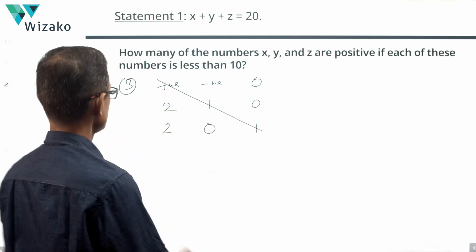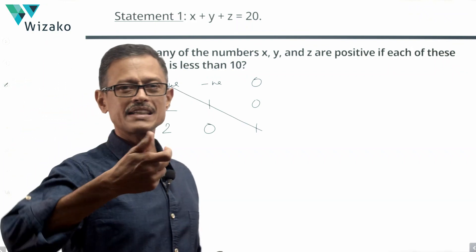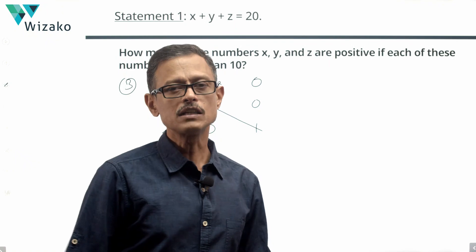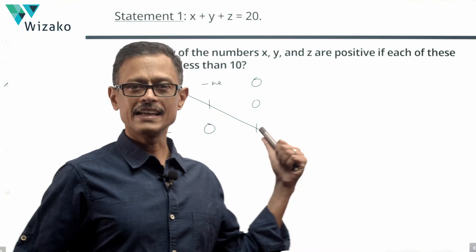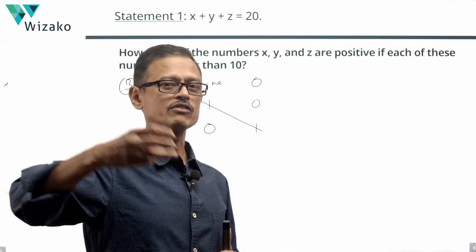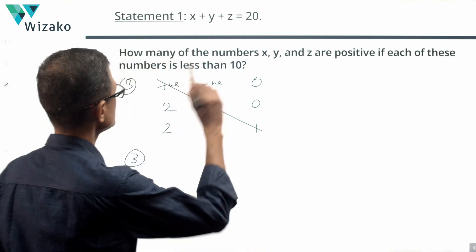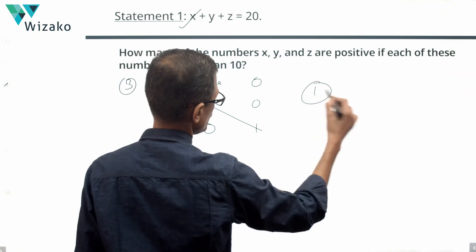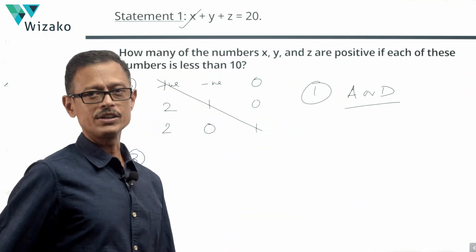All three numbers being positive is what will make sense, because the sum of any two numbers can be at most just under 20, and you need the third number to also be positive to make the sum equal to 20. So through this alternative process — evaluating zero, one, two, and then three — we establish that all three numbers must be positive. Statement one alone is sufficient, and the answer option is A or D.